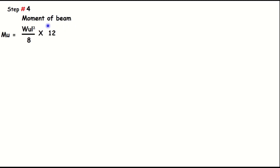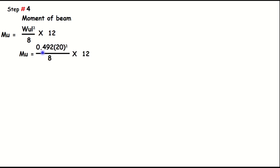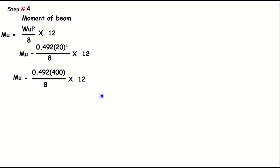Step number four: find the maximum moment. The maximum moment formula is Mu = wL² divided by 8, multiplied by 12. Calculating: Mu = 0.492 × (20)² divided by 8, multiplied by 12, giving a maximum moment of approximately 200 kip-inches.